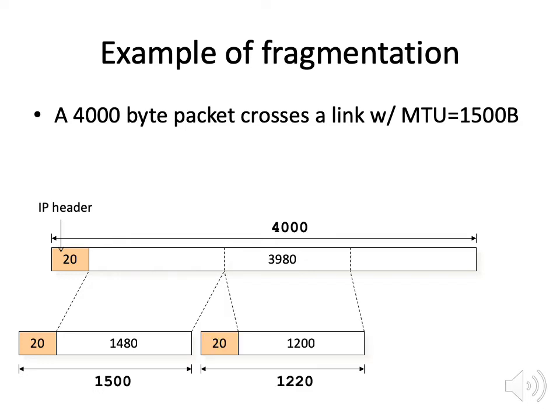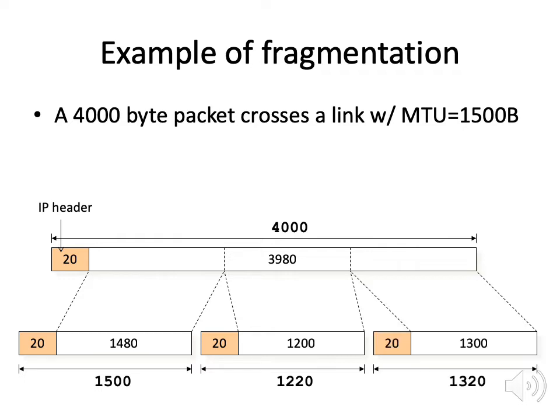We can choose how big we want the second packet to be. In this case, we use 1,200 bytes of data and a 20-byte header. Then we're left with a final packet of 1,300 bytes of data and another 20-byte header.